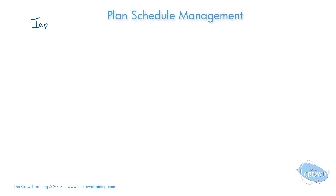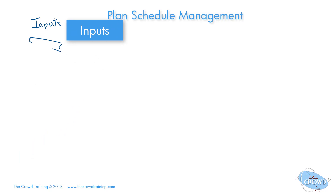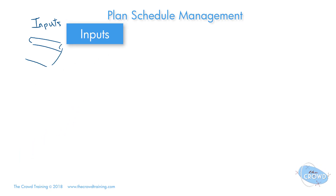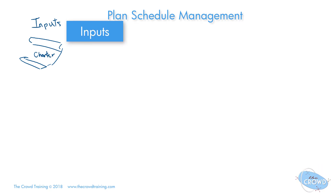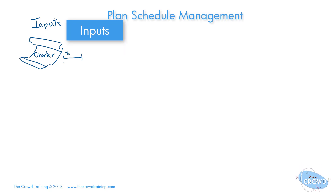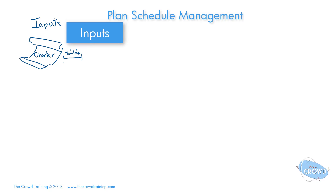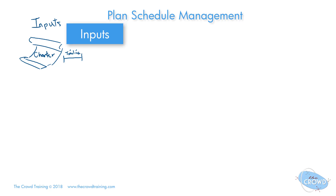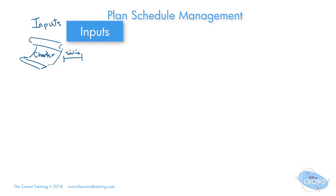We start with the inputs, and there are a few things. If we're going to have a schedule, it helps to know the charter — what the expectation is. The charter also has the basic timeline we're expecting, so we can schedule around it and determine where we need to be and how often we need to hit certain milestones, because the key milestones or phases might be listed there.